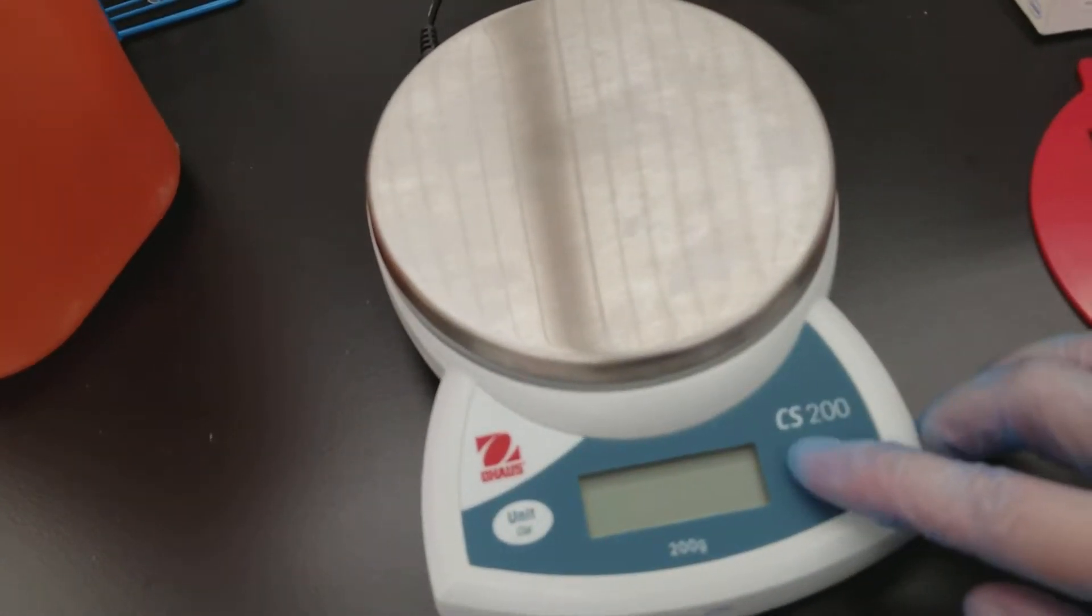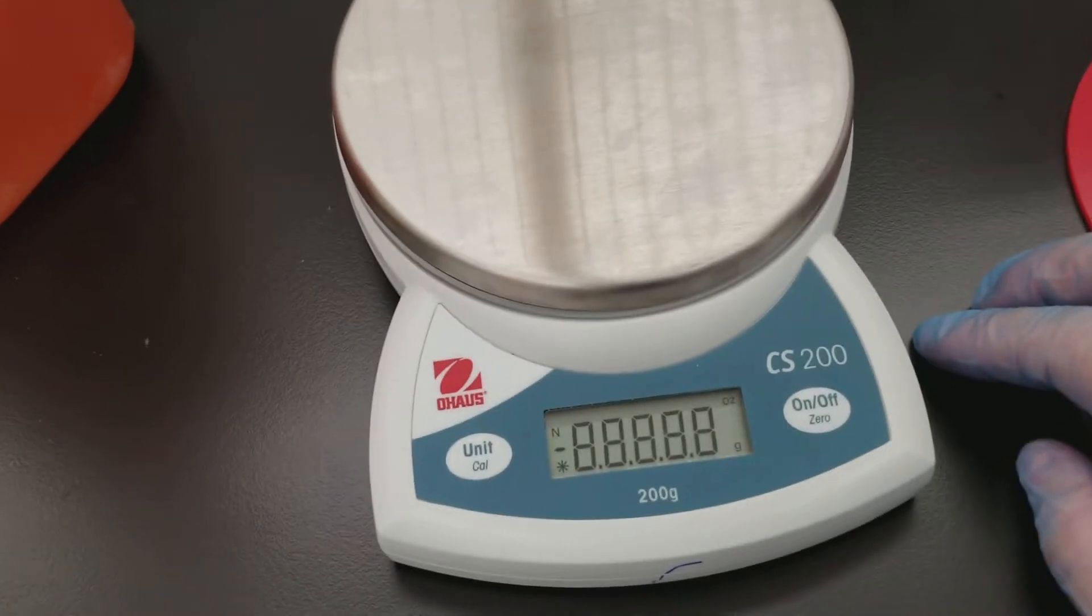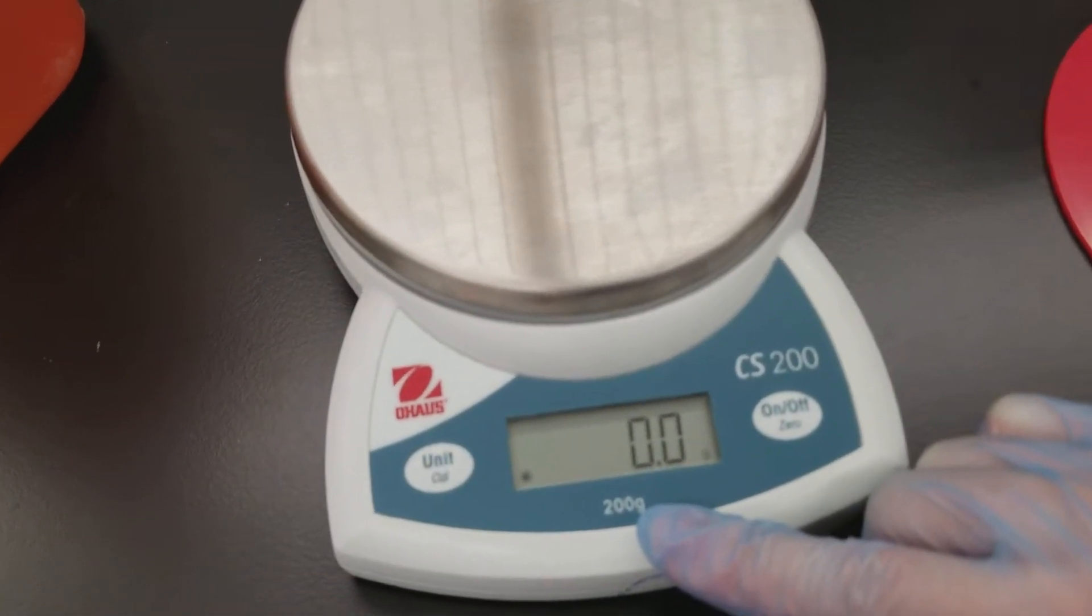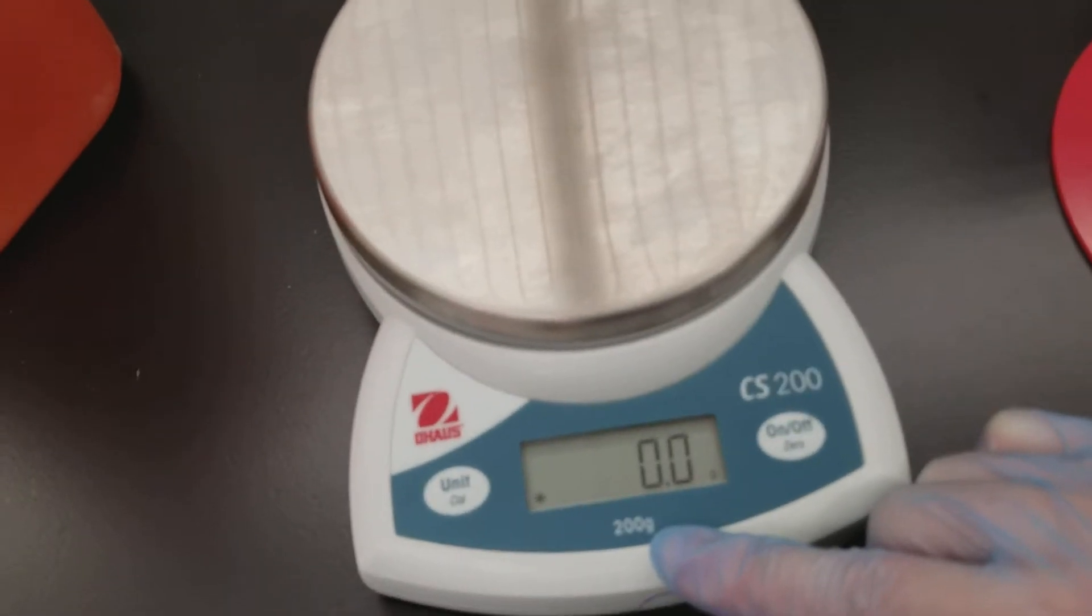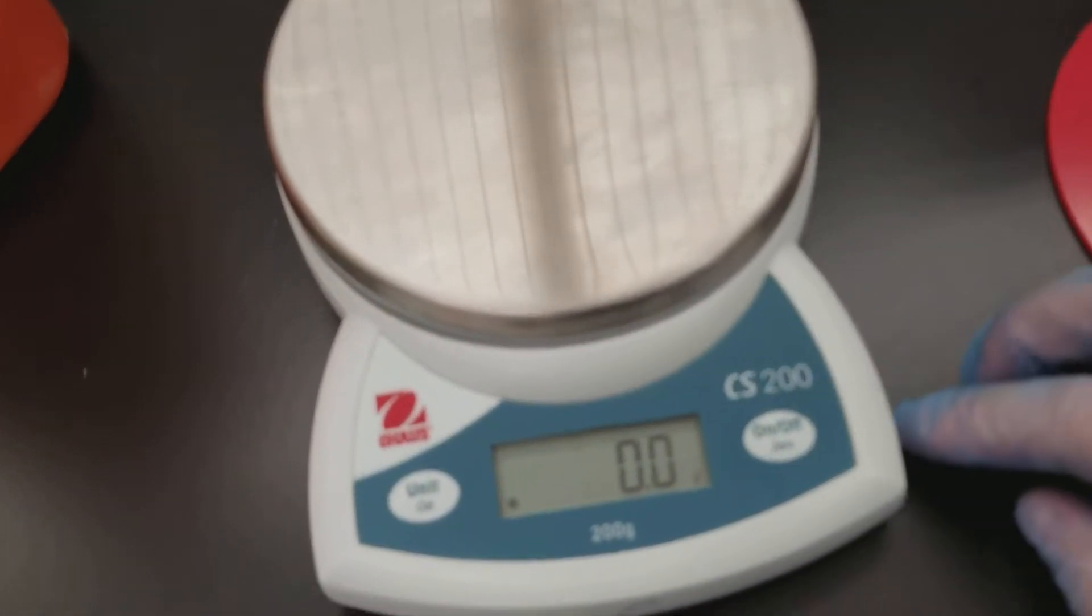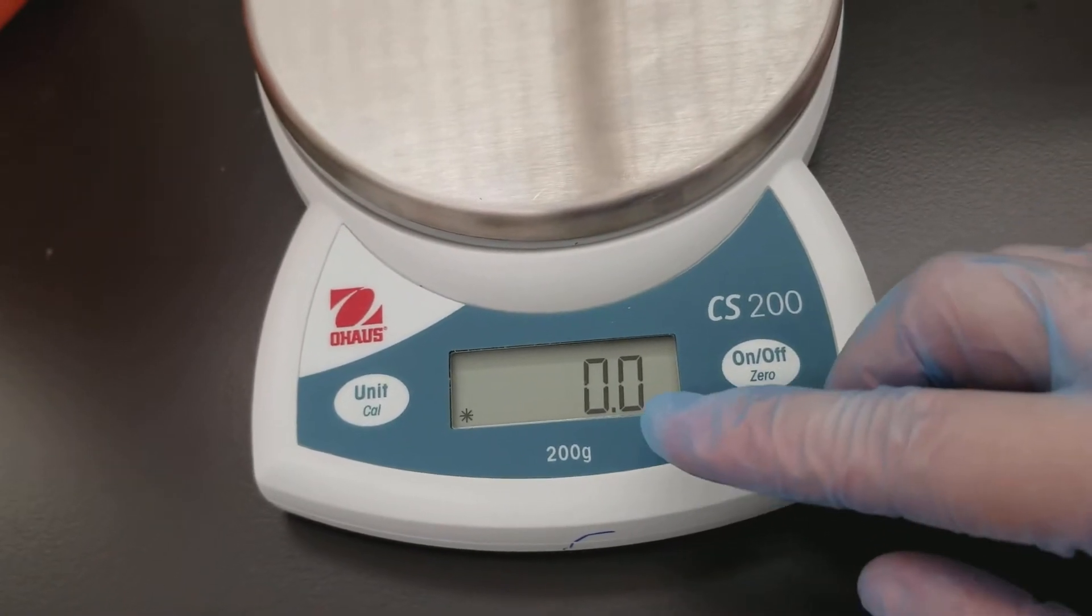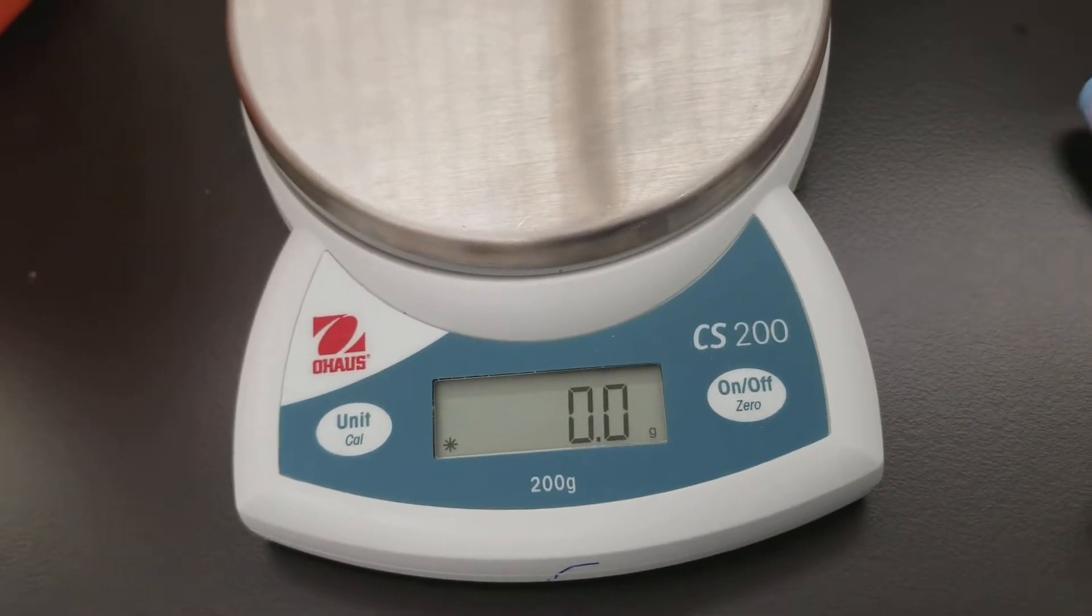So the next thing we're going to do is turn it on. This is calibrated for 200 grams. Anything outside of that in the upper region, if it's heavier than that, it has an E on the screen, which means an error, and therefore you can't measure it.